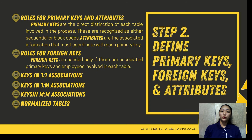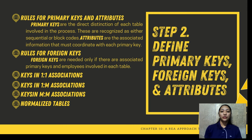For Step 2: define the primary keys, foreign keys, and attributes. Primary keys are the direct distinction of each table involved in the process. Attributes are the associated information that must be coordinated with each primary key, while foreign keys are supporting keys that accompany the primary key. For example, in taking an order from a customer, the primary key would be the order number, and the possible foreign keys would be the customer number or employee number.